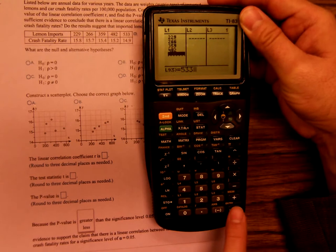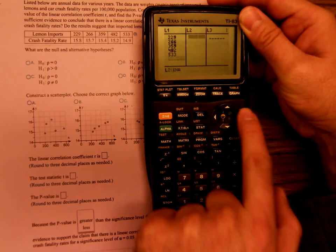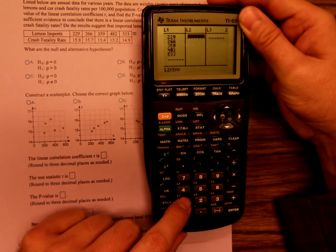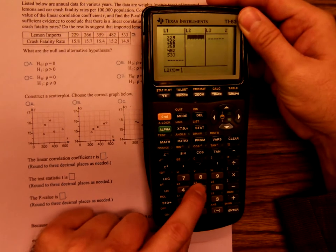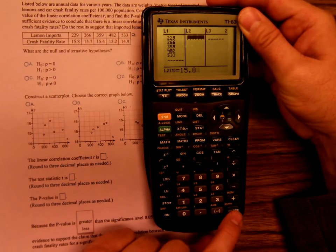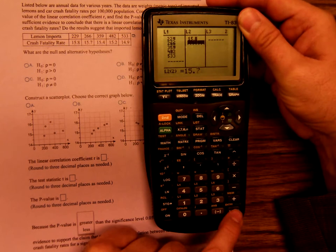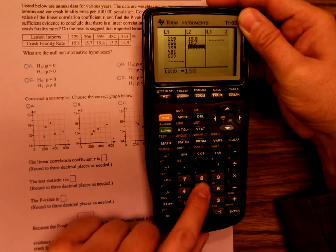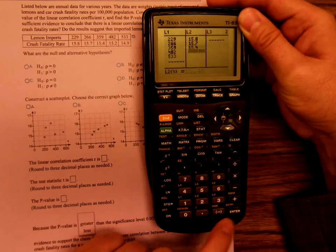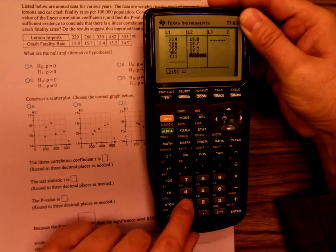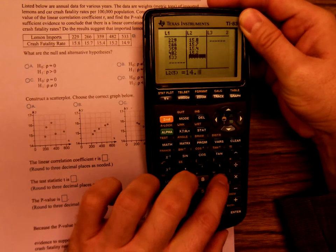And now I'll say enter and move over. Now I'll punch in the second row: 15.8, enter, 15.7, 15.4, 15.2, 14.9.